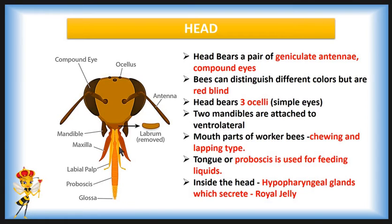This is the proboscis. Inside the head, the hypopharyngeal gland secretes royal jelly. The proboscis is also used for collecting water and nectar.